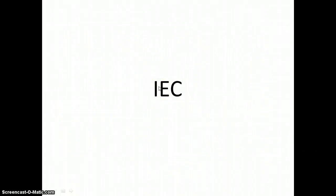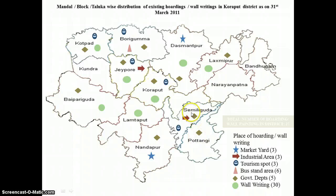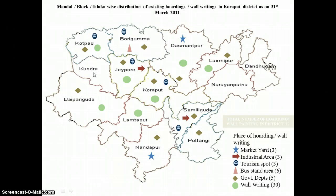We will now look at IEC activities and IEC information in the district. Across all mandals in the district, we have something — either a market yard or wall writing, or a government department message. Everywhere we have some IEC activity, except for two or three places: Narayan Patna, Panduram, and Kundra, where we do not have any IEC activities in these three mandals.